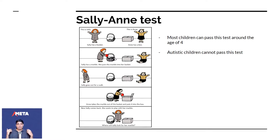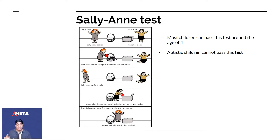They just look at the entire story, see where the end result is, and say she just put it in the box, so Sally is going to come in and look in the box. But there is no way Sally could have known about this information. Children after the age of four understand this.